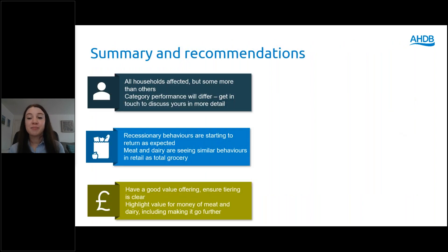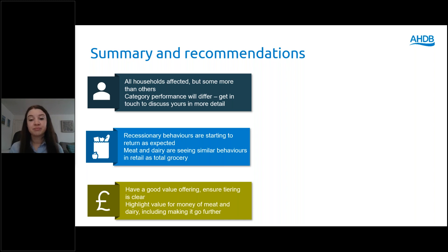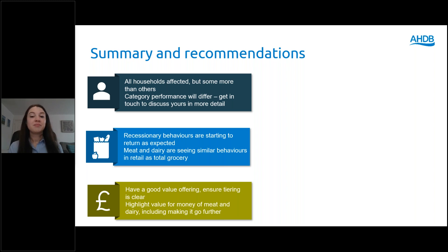In summary, some households are impacted by the cost of living crisis more than others, and this is also the case with categories which will all be impacted differently. We are seeing a return in those recessionary behaviours, which is to be expected. At the moment, we're seeing trends in total grocery also play out in meat and dairy, such as the trading down and the changing product mix. Having a really good value offering is increasingly important, and ensuring that tiering is clear for those who are looking for the cheapest products. But for those that aren't, highlighting products which are really good value for money and how shoppers can make those products go further could be really important.